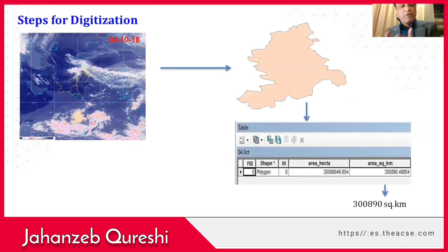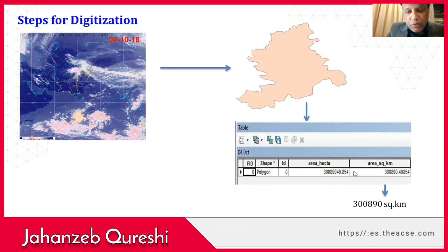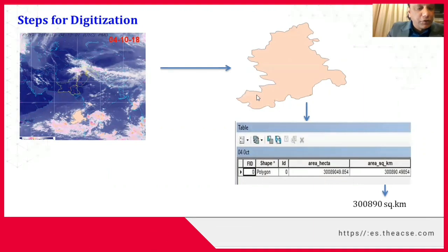This is how we performed the digitization steps. This is a satellite image from the FANJINE meteorological satellite for the date 4th October. This is the shape file of the tropical cyclone, and this is how we calculated its aerial extent in square kilometers — that was 300,890 square kilometers for 4th October.